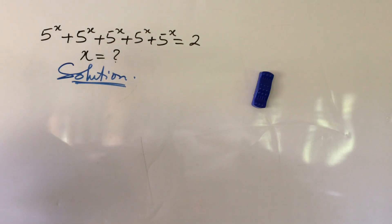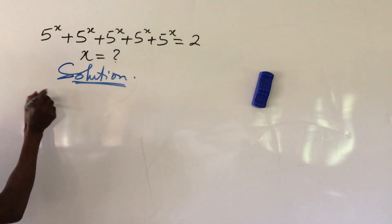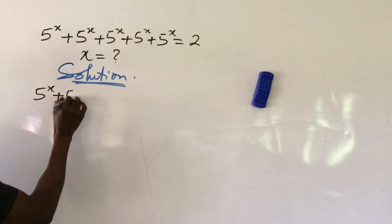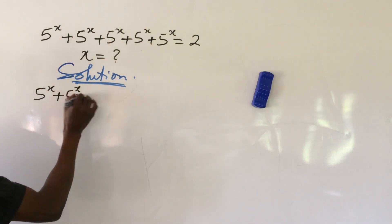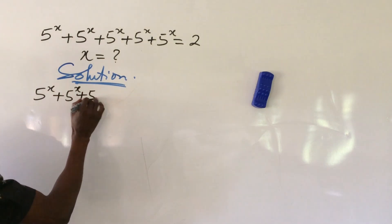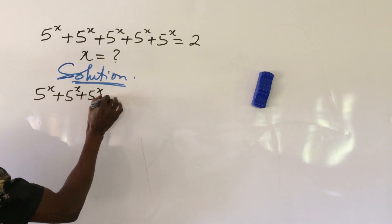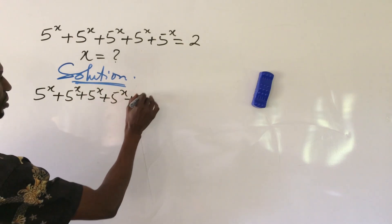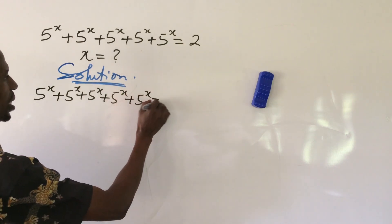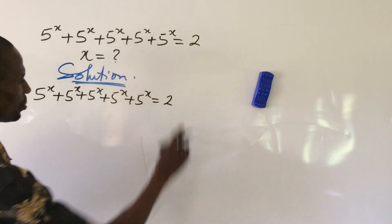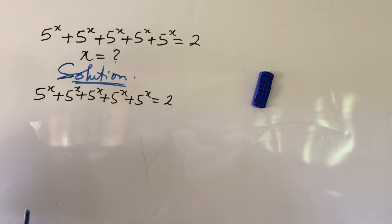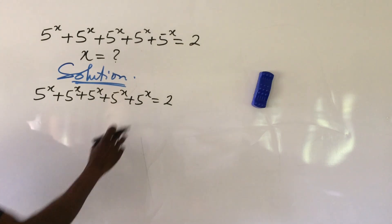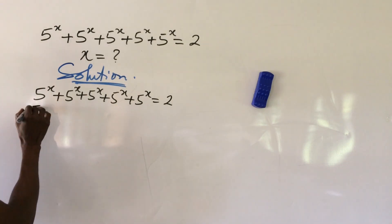Let's put down our question, which is 5 to the power of x, plus 5 to the power of x, plus 5 to the power of x, plus 5 to the power of x, equal to 2. The first thing we do here is to factor out 5 to the power of x.